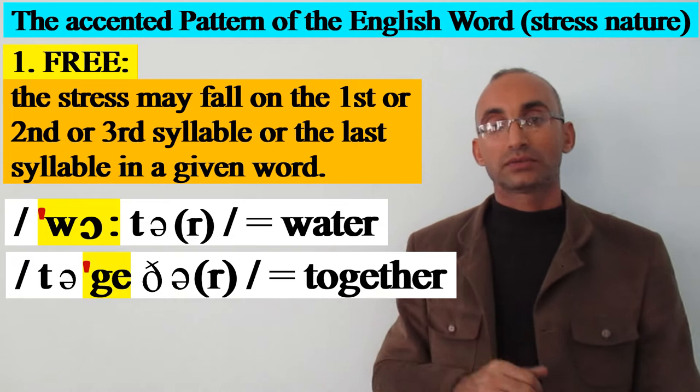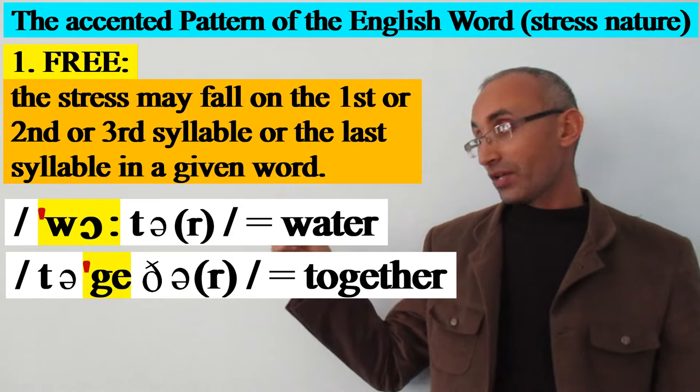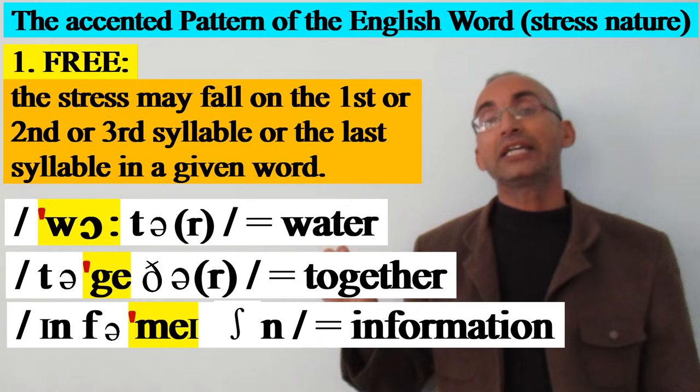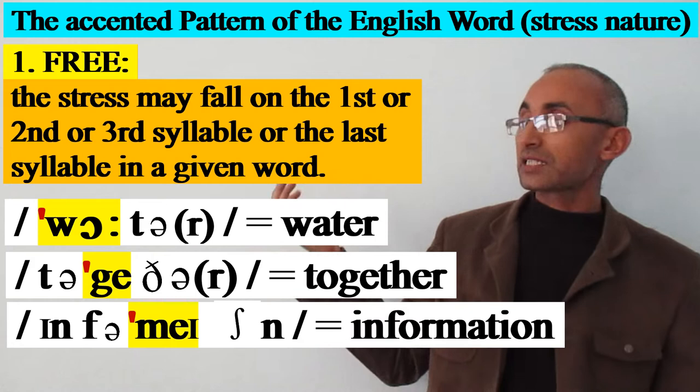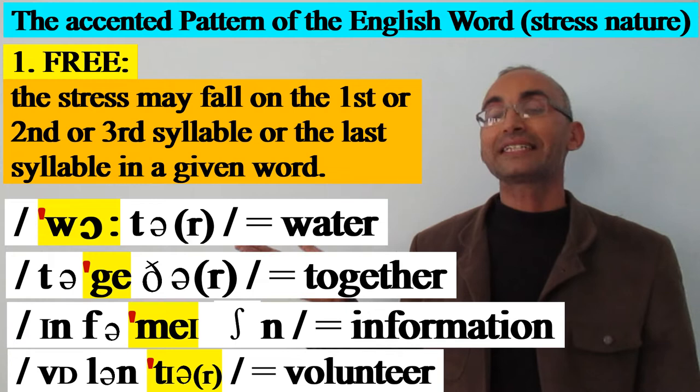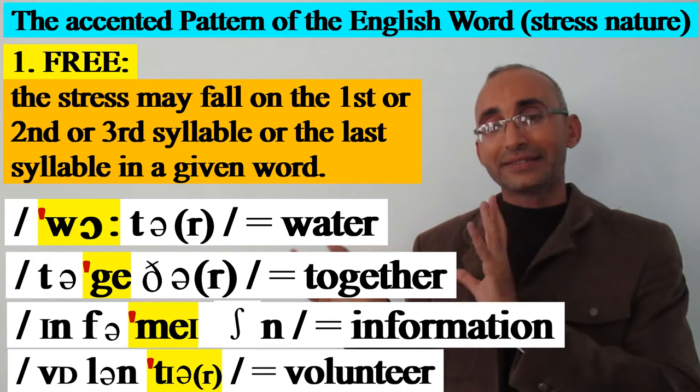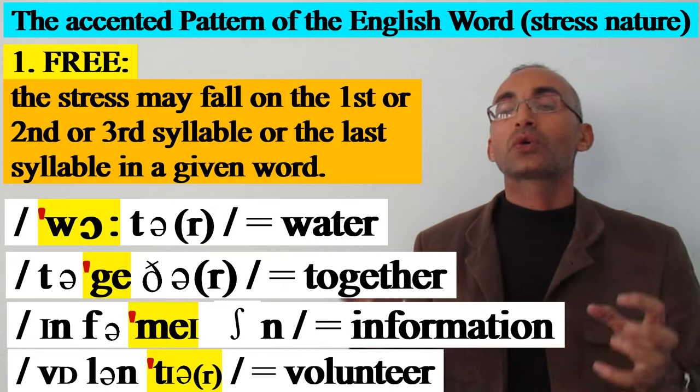Also, in the word 'information,' 'ma' is my stressed syllable — the third one. And the last word, 'volunteer' — 'teer' is the last syllable in this word and it is stressed. So you see here a kind of difference in the stress position in the English word — that's why it is considered as free.